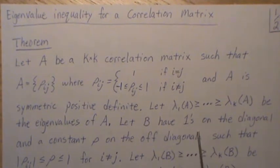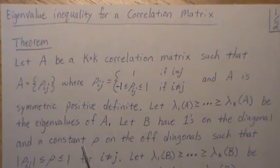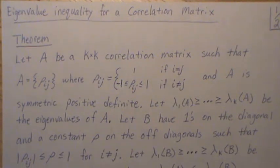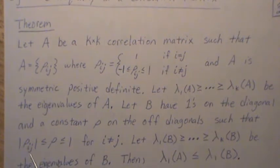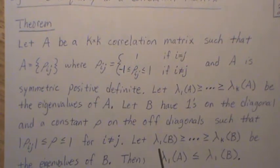Let B have 1s on the diagonal and a constant ρ on the off-diagonal, such that ρ is greater than or equal to the absolute value of the off-diagonals of A. Let λ_1(B) through λ_k(B) be the ordered eigenvalues of B.